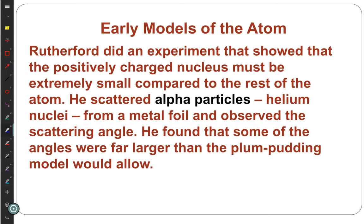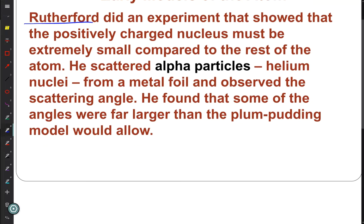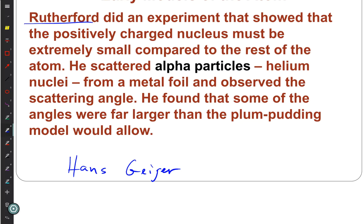Then came the work of Ernest Rutherford's research group. Working under him was Hans Geiger — famous for the Geiger part of the Geiger-Mueller counter. It's always called a Geiger counter, dropping Mueller off entirely.